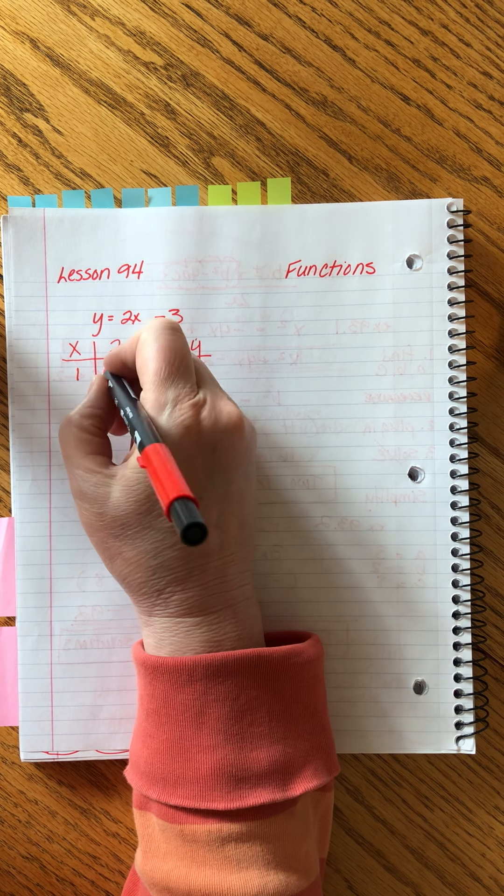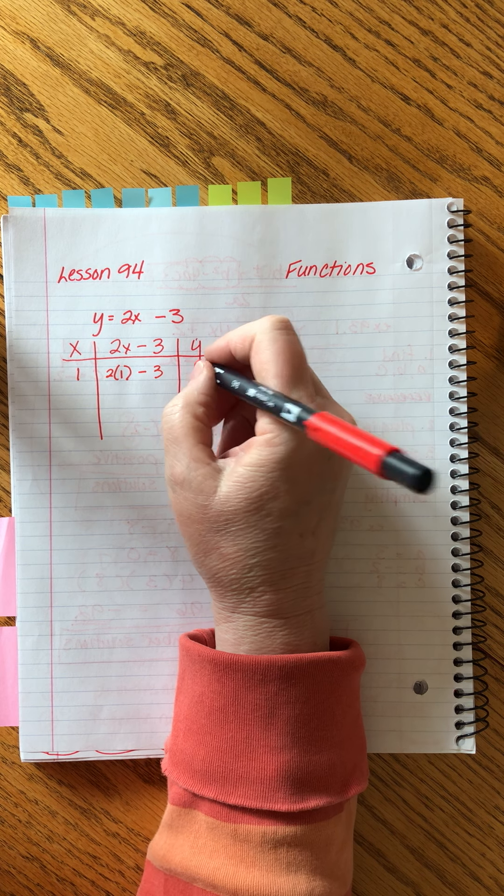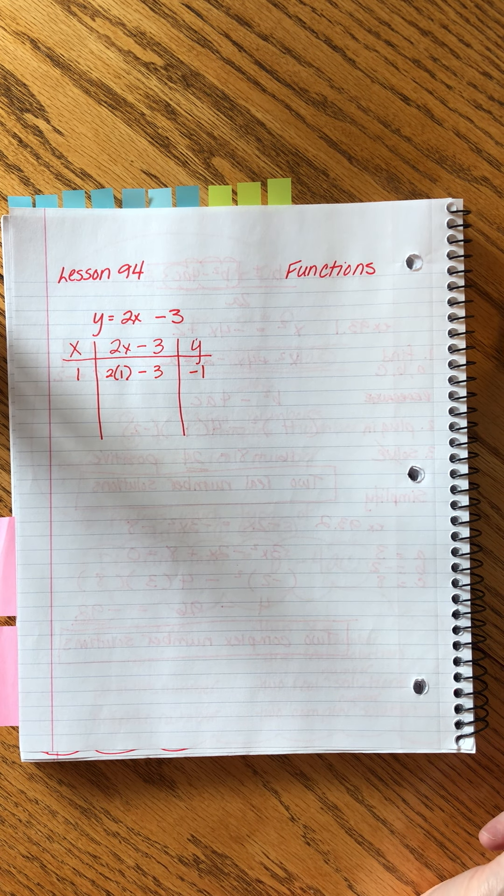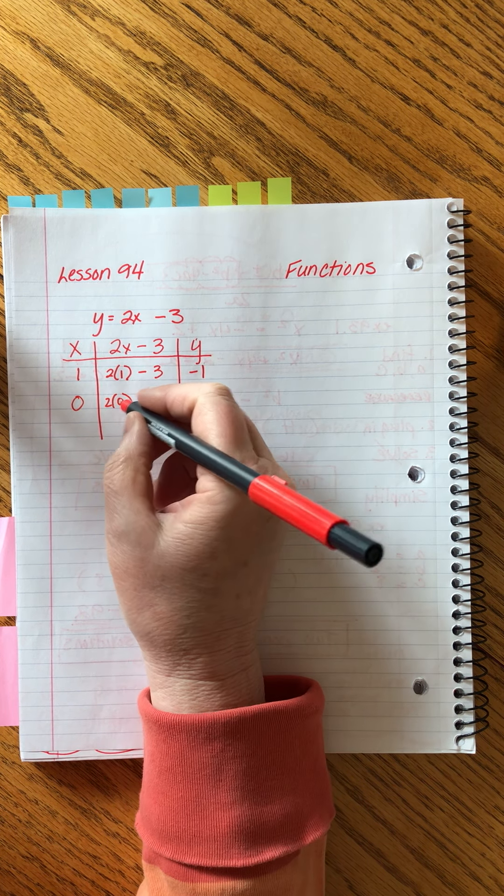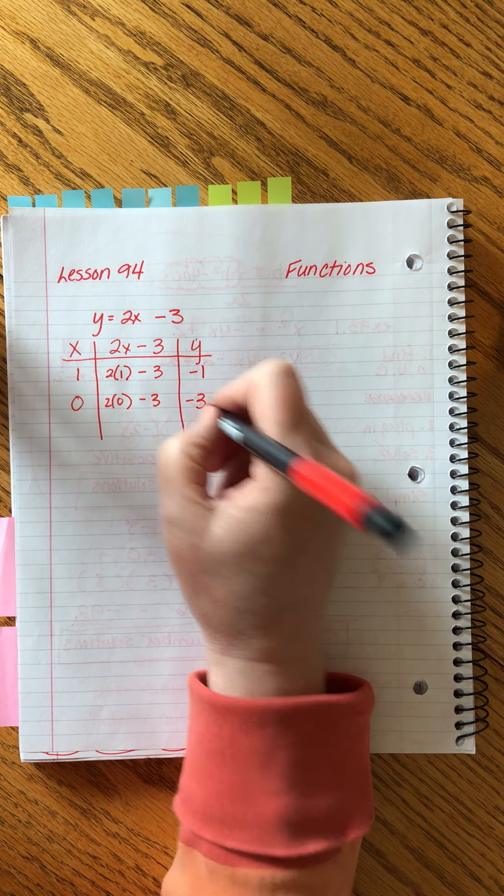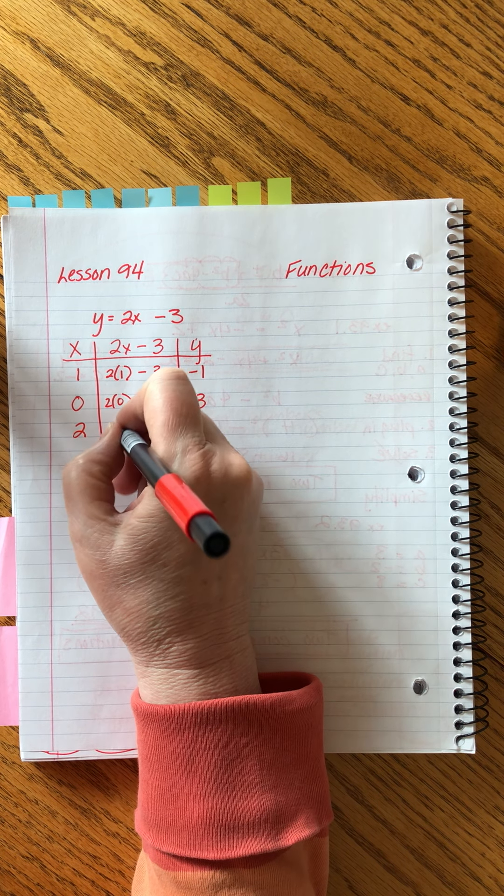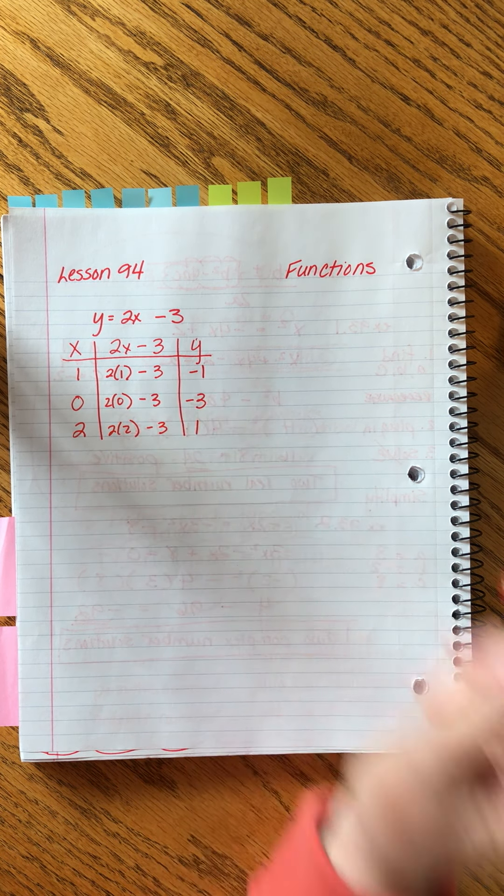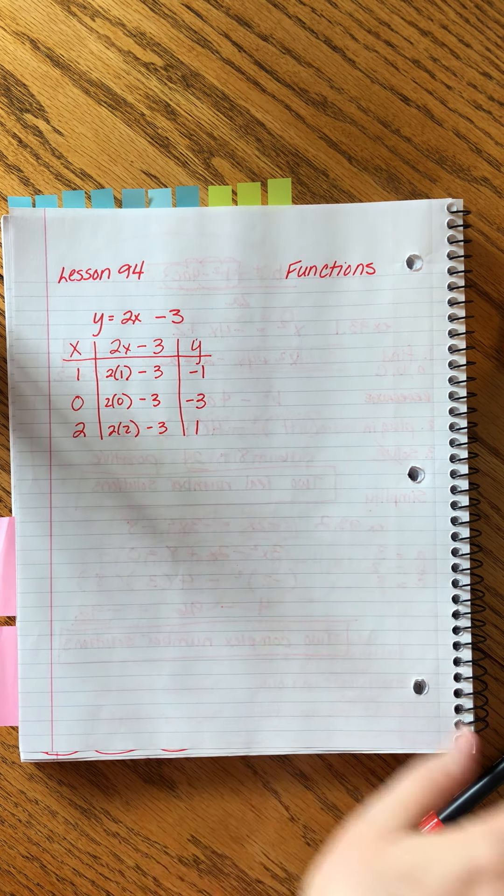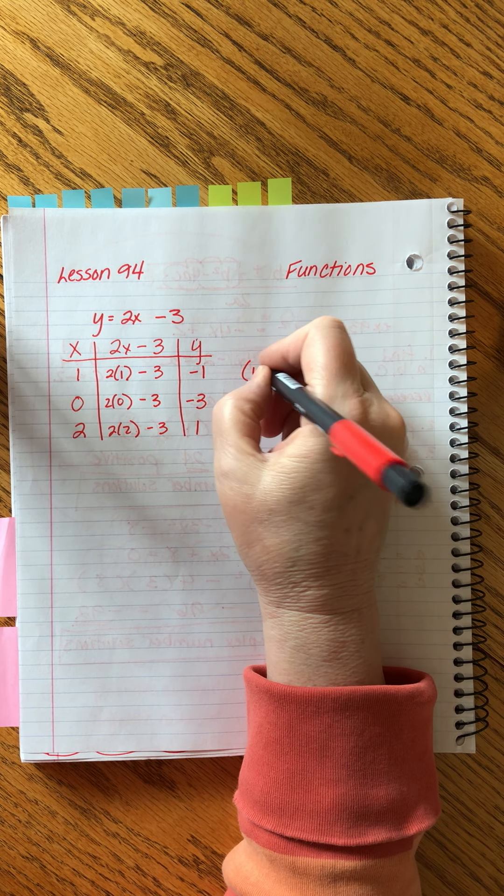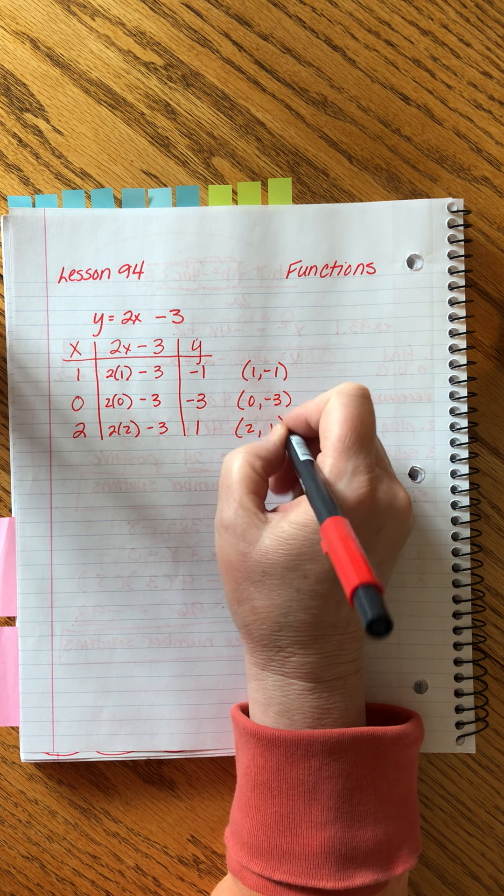Let's do it again just for practice. Let's choose 1 as one of our numbers. Then we'd multiply 2 times 1 minus 3. That's 2 minus 3. That's minus 1. And then we'd choose another easy one. Let's choose 0. 2 times 0 minus 3. That becomes 0. This is minus 3. And then let's just choose positive 2. 2 times 2 minus 3 would give us positive 1. That was just a little chart that we made. And then we would graph these pairs of points. We would graph 1 and negative 1, and we would graph 0 and negative 3, and we would graph 2 and 1.